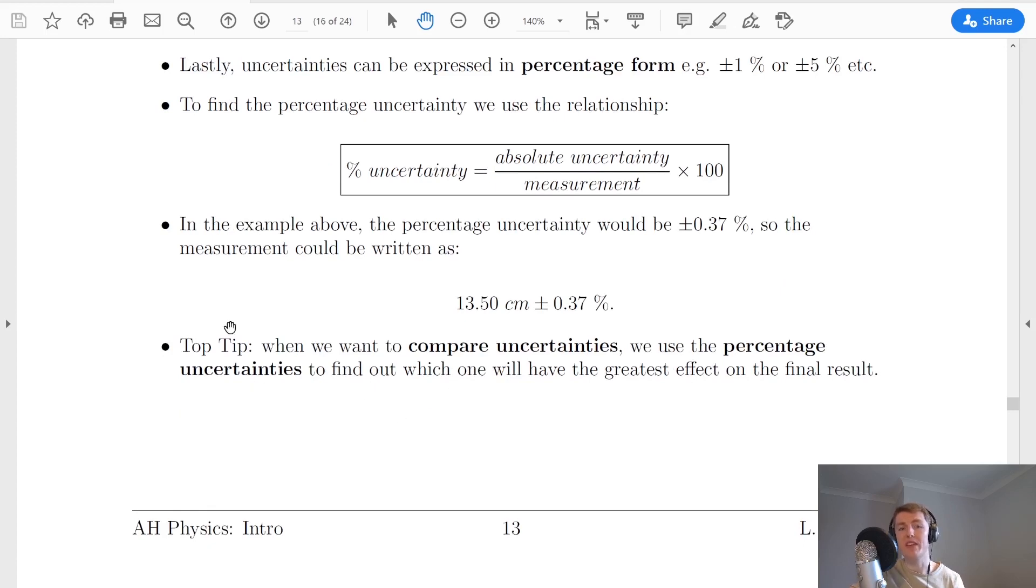The final thing I want to leave you with is a top tip: when we want to compare uncertainties we can use the percentage uncertainties to find out which one will have the greatest effect on the final result. So more often than not you will be using percentage uncertainties rather than absolute and fractional uncertainties in your calculations.